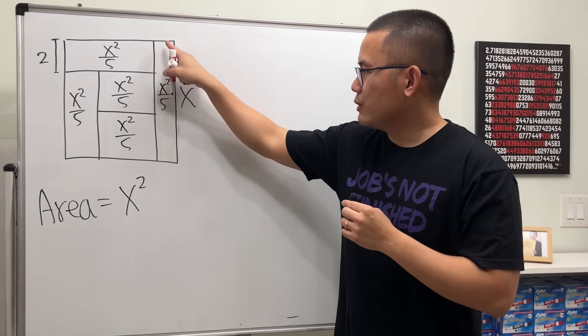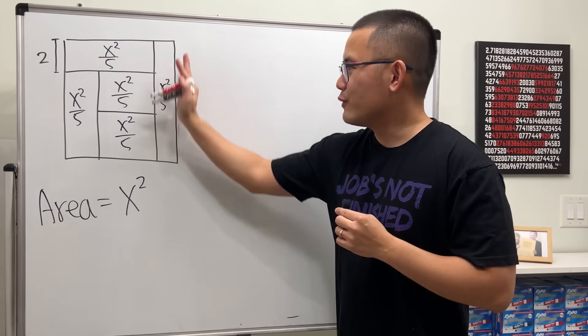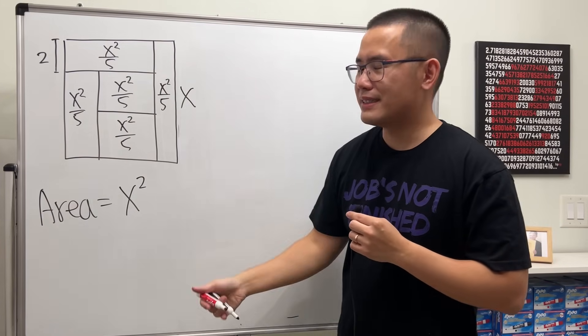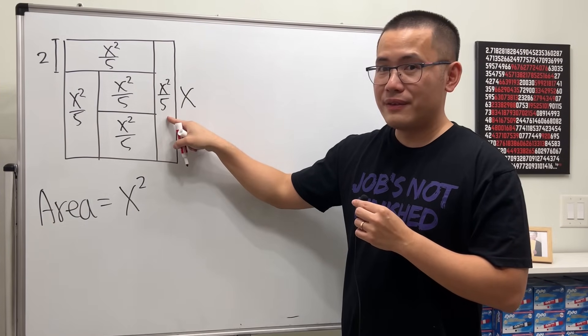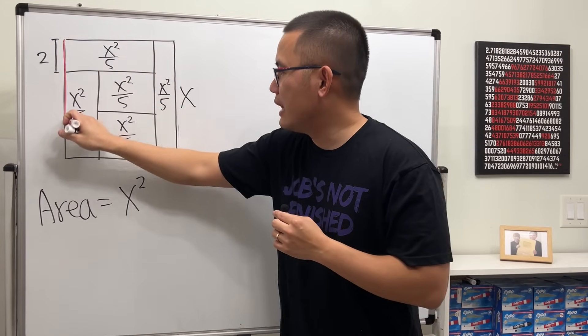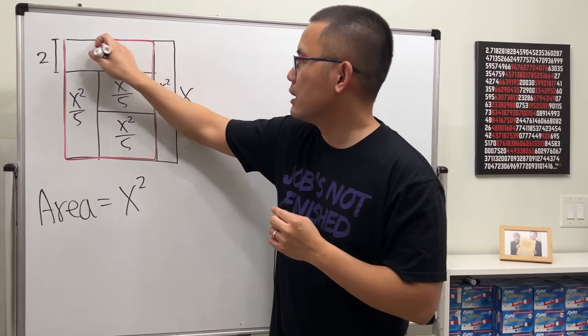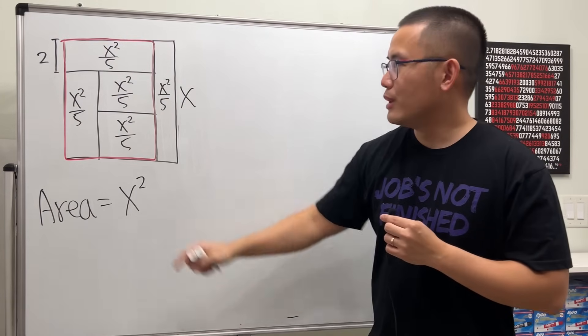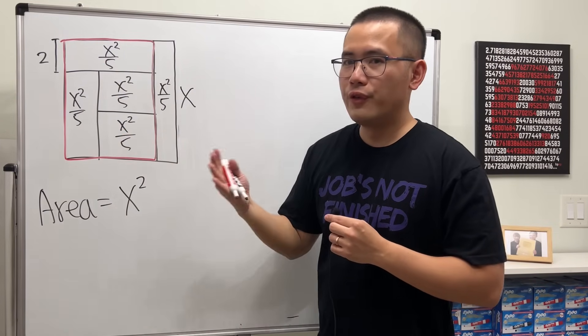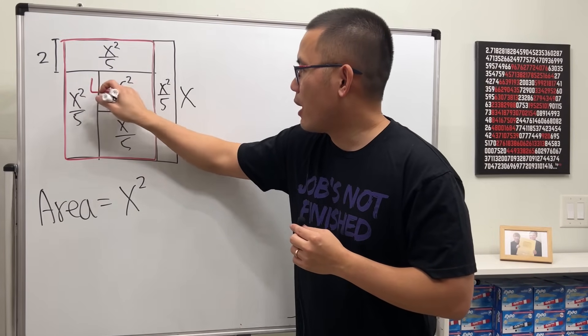This little strip right here, it's just like the driveway of the building, something like that. It's x squared over five, right? One-fifth of the whole square. So that means the whole thing left right here must be what? Just one, two, three, four - four of this together. So the red part is four x squared over five.